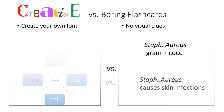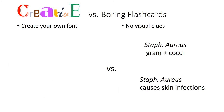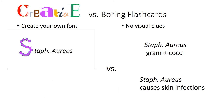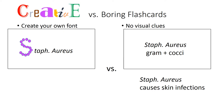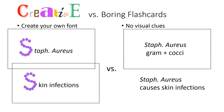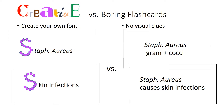Creative flashcards: create your own font. Here we use solid purple dots to write the letter S to help you remember that staph aureus is gram-positive cocci and that it causes skin infections.